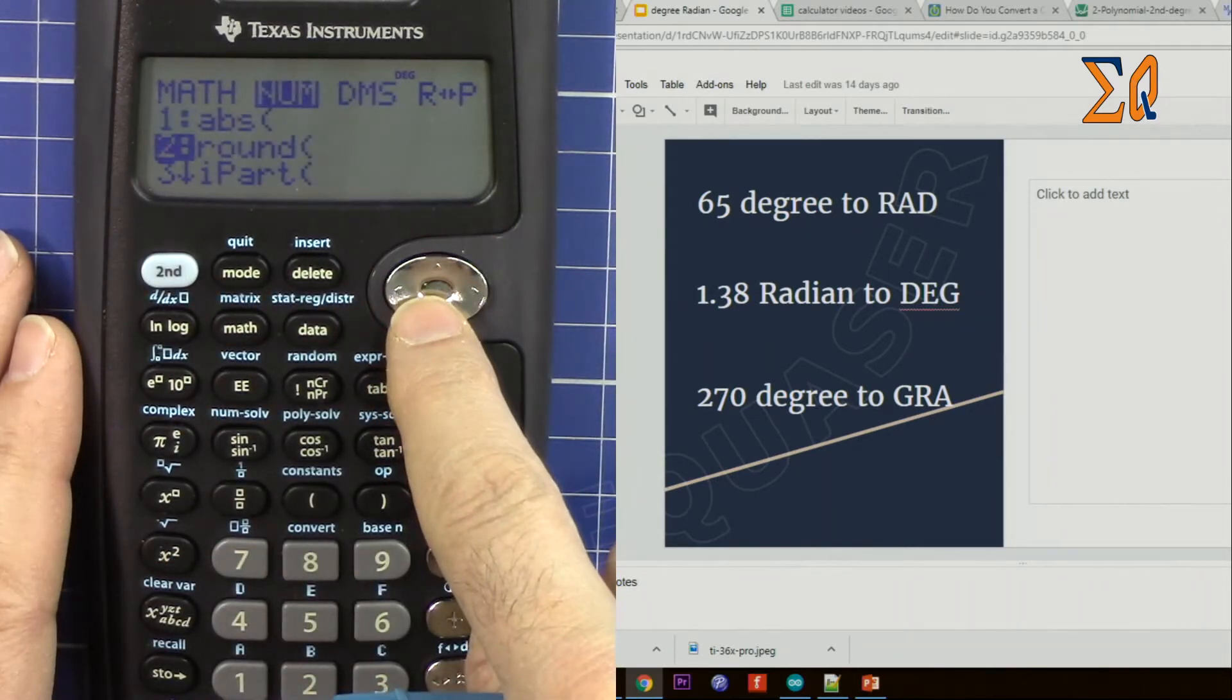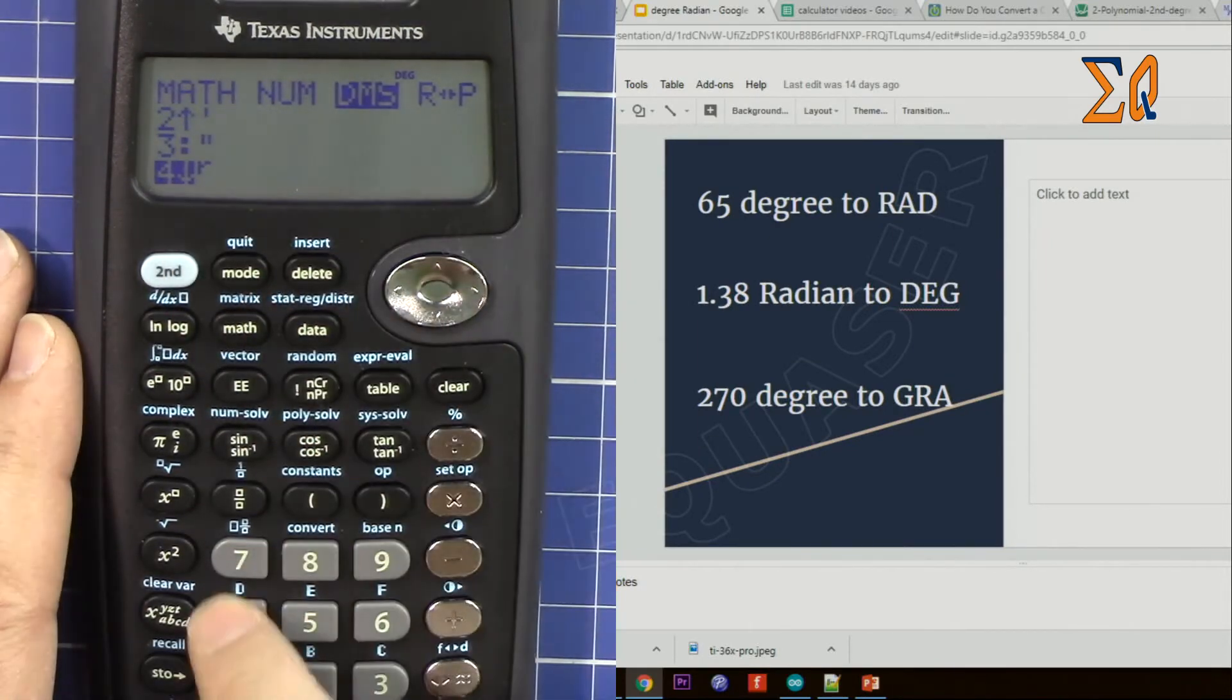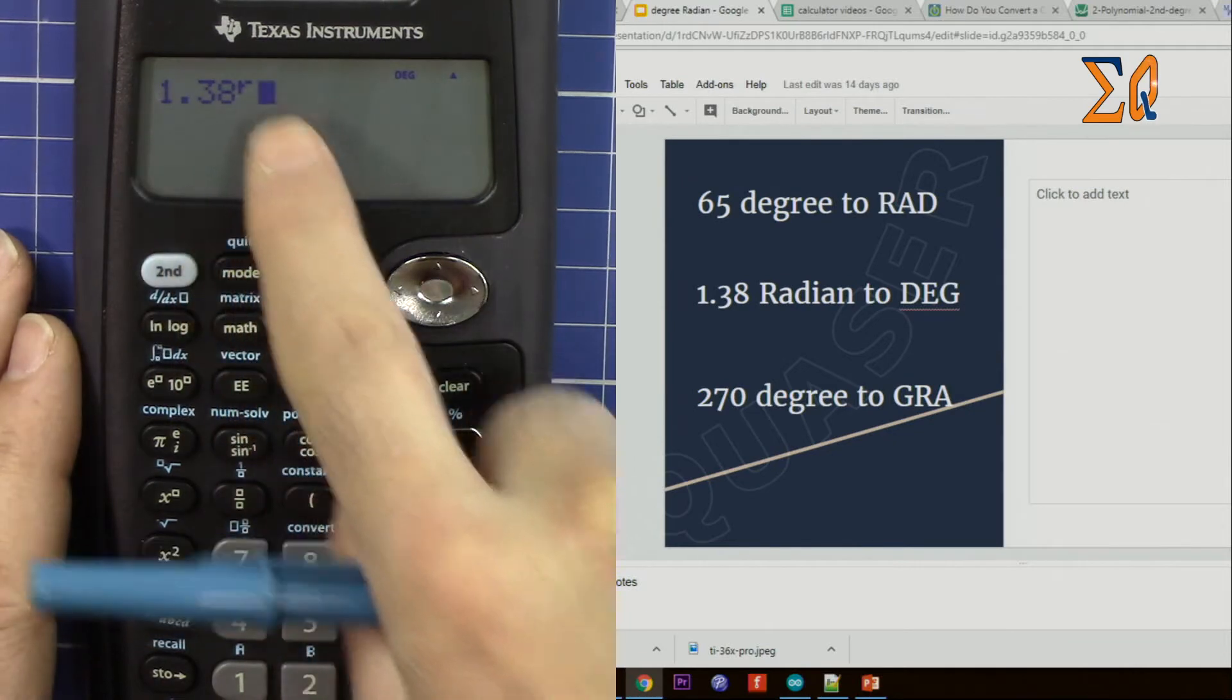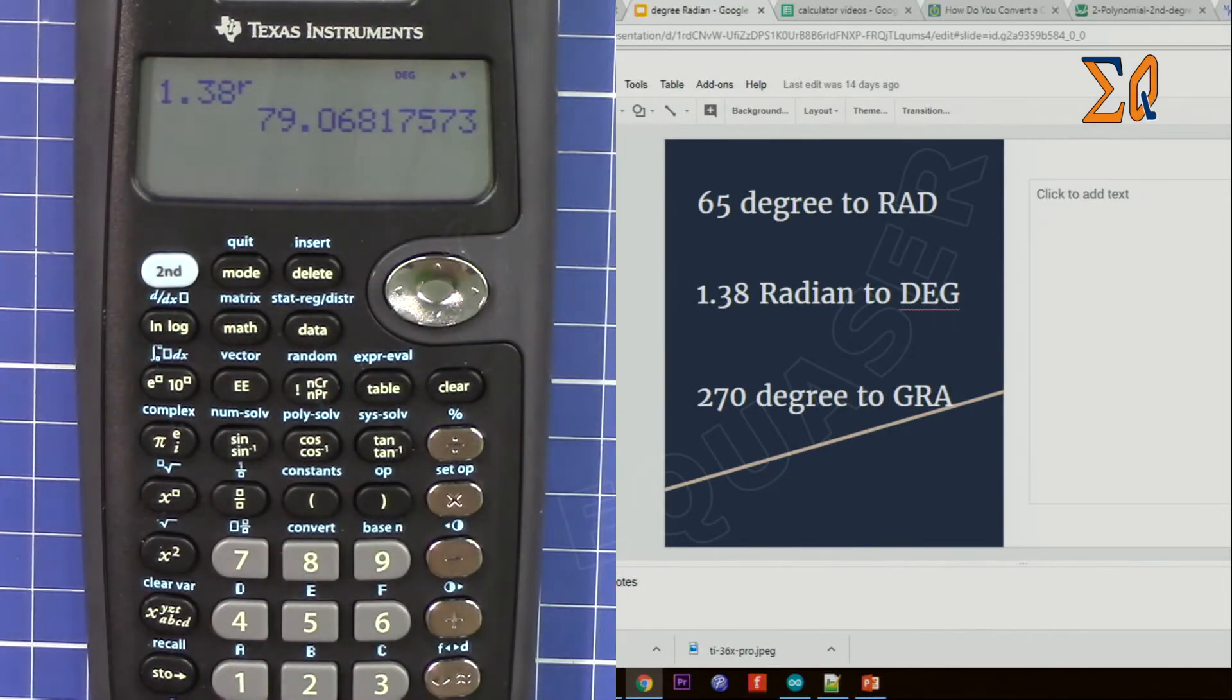...in degree, so 79.068. The third one is 270 degrees to gradient. So clear, we have to go to gradient.